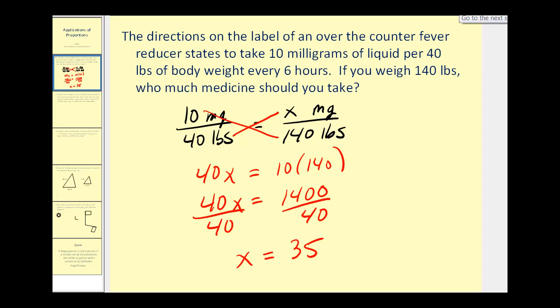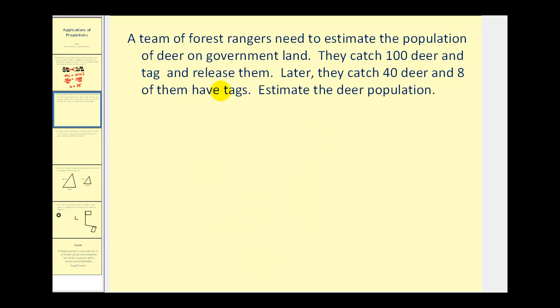Take a look at another example. A team of forest rangers need to estimate the population of deer on government land. They catch 100 deer and tag and release them. Later they catch 40 deer and 8 of them have tags. Estimate the deer population.